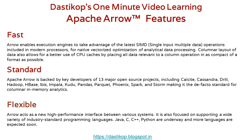Apache Foundation has released Apache Arrow for big data analytical purposes. Let us consider its features. First, it is fast — Arrow enables execution engines to take advantage of the latest SIMD (Single Input Multiple Data) operations included in modern processors for native vectorized optimization of analytical data processing.